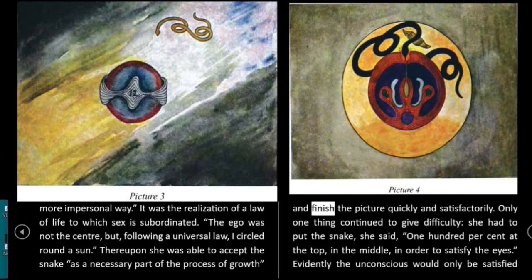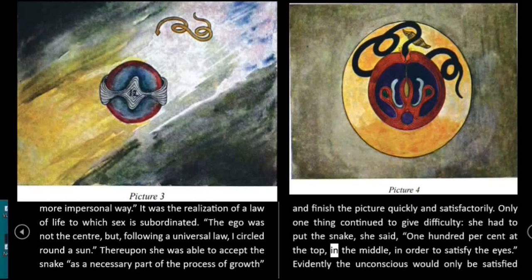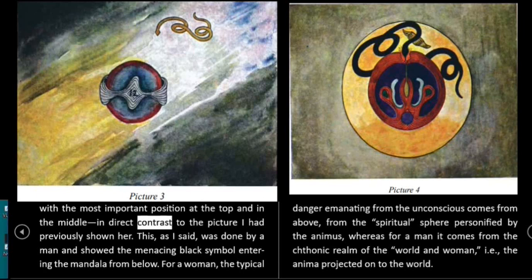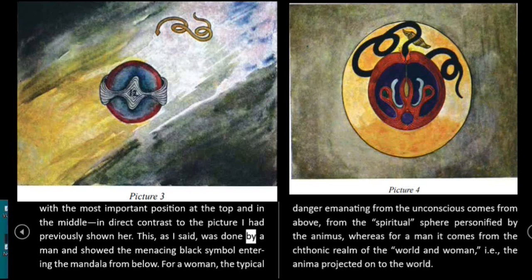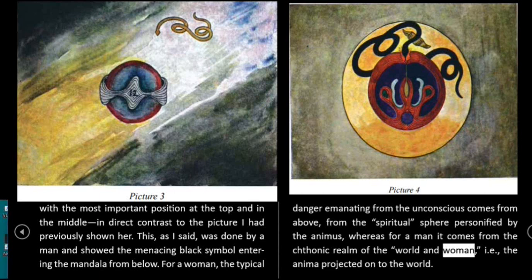At the point where the snake penetrates the nuclear membrane, fire breaks out — emotion. Her conscious mind interpreted this conflagration as a defensive reaction on the part of the sphere, and accordingly she tried to depict the attack as having been repulsed. But this attempt failed to satisfy the eyes. She was obviously in a dilemma: she could not accept the snake, because its sexual significance was only too clear to her without any assistance from me. I merely remarked to her: 'This is a well-known process which you can safely accept,' and showed her from my collection a similar picture, done by a man, of a floating sphere being penetrated from below by a black phallus-like object. Later she said: 'I suddenly understood the whole process in a more impersonal way. It was the realization of a law of life to which sex is subordinated. The ego was not the center, but, following a universal law, I circled round a center.' Thereupon she was able to accept the snake as a necessary part of the process of growth and finish the picture quickly and satisfactorily. For a woman, the typical danger emanating from the unconscious comes from above, from the spiritual sphere personified by the animus, whereas for a man it comes from the chthonic realm of the world and woman, i.e., the anima projected onto the world.